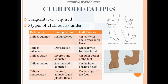Based on foot positions and gait patterns: talipes equinus — the foot is in plantar flexion and the patient walks on the toes with the heel lifted, typically resembling horse walking. Talipes calcaneus — the foot is in dorsiflexion and the patient walks on the heel with the forefoot lifted. Talipes varus — the patient walks with an inverted and adducted foot, walking on the outer border of the foot.